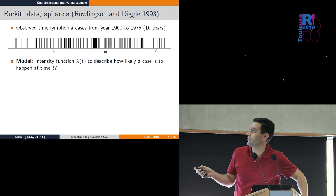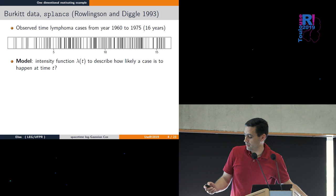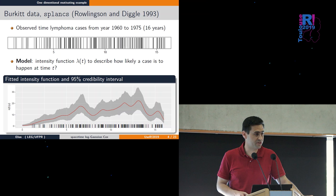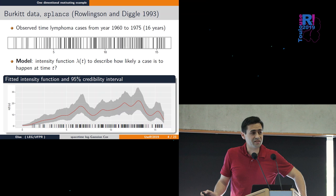We want to fit an intensity function λ(t) which describes how likely a case is to happen at each time t. For example, here has fewer cases, here has more, so we'd like a curve like this one - the intensity function in red with 95% credibility interval.